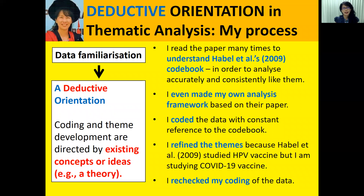So what I have shown you here is the deductive orientation in thematic analysis. I read the paper many times to understand Hebel et al.'s code book in order to analyze accurately and consistently. I even made my own analysis framework — the table you saw just now — and I looked for definitions and examples they offered in their paper to build it. I have yet to refine all the themes, but I will do so as I continue analyzing, because Hebel et al. designed their code book for HPV vaccine while I am analyzing COVID-19 vaccine, so the potential issues and concerns will be different. The coding process is recursive.